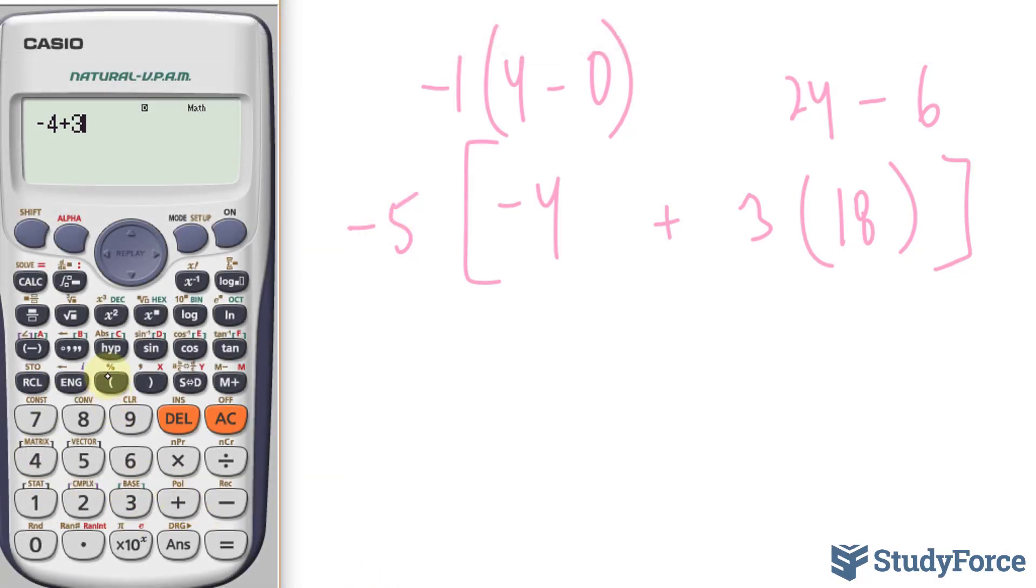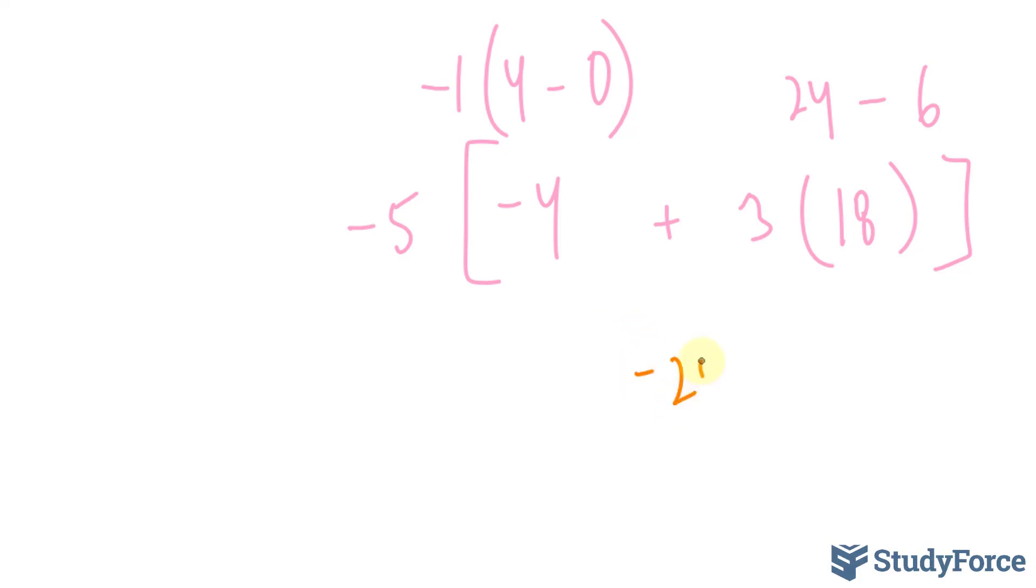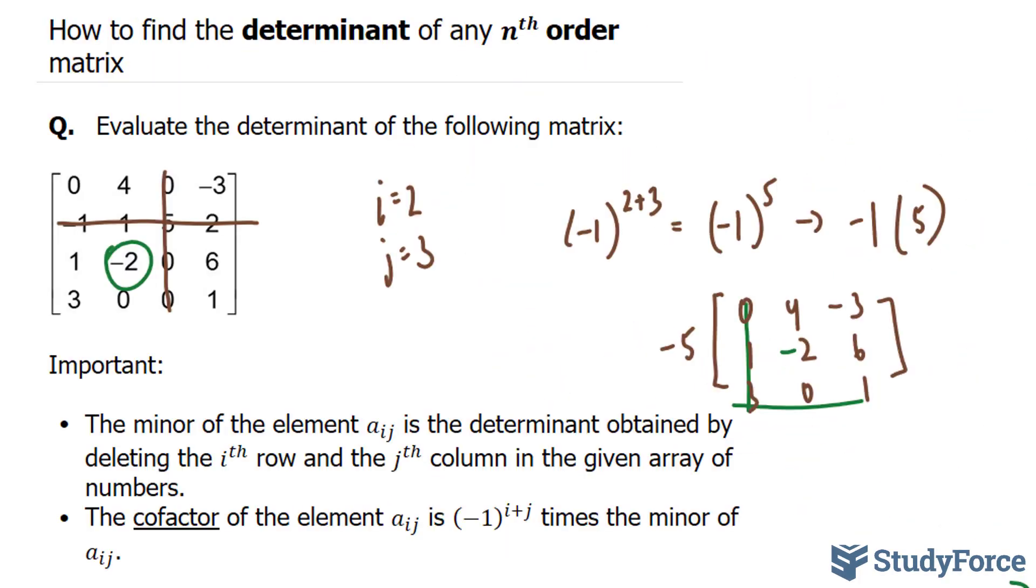And there you have it. That is how to find the determinant of any nth order matrix. Just keep in mind that you need at least one row or one column where you have all zeros except for one number. Then, you can use the method that was shown here.